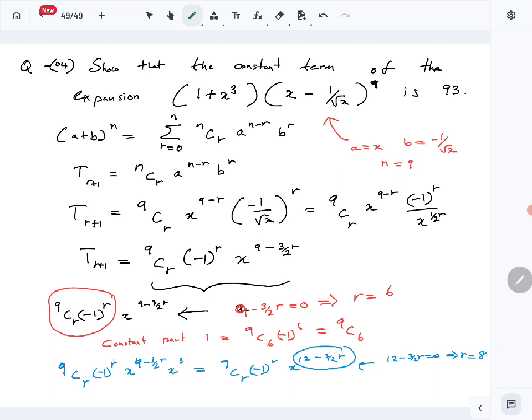So that is the second constant part. So that is going to be what? Constant part 2 is 9C8 minus 1 to the R, so that is just 9C8. So then the constant term is constant term part 1 plus part 2. So part 1 was 9C6, part 2 was 9C8.